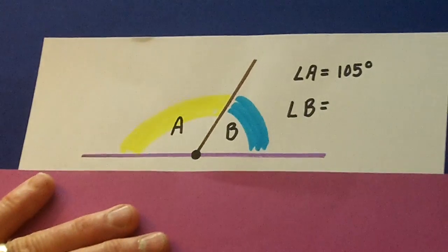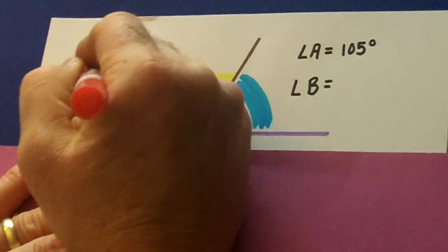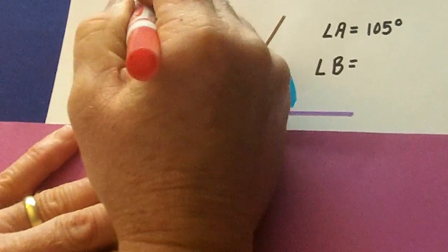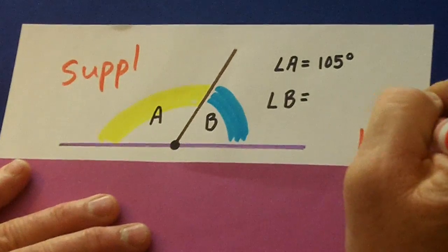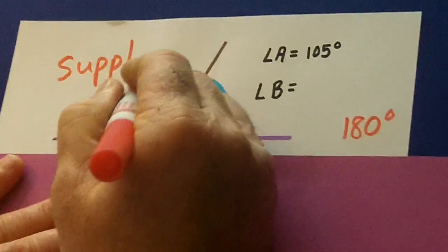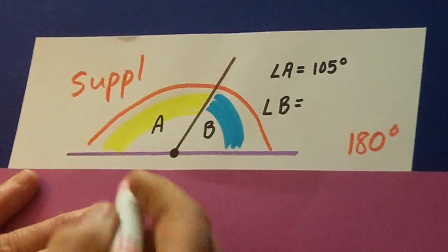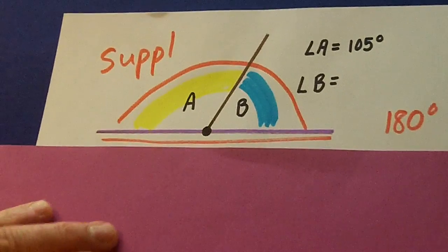Now we go to our supplementary angles. Remember, supplementary angles equal 180 degrees. Here we go. 180 on our straight angle.